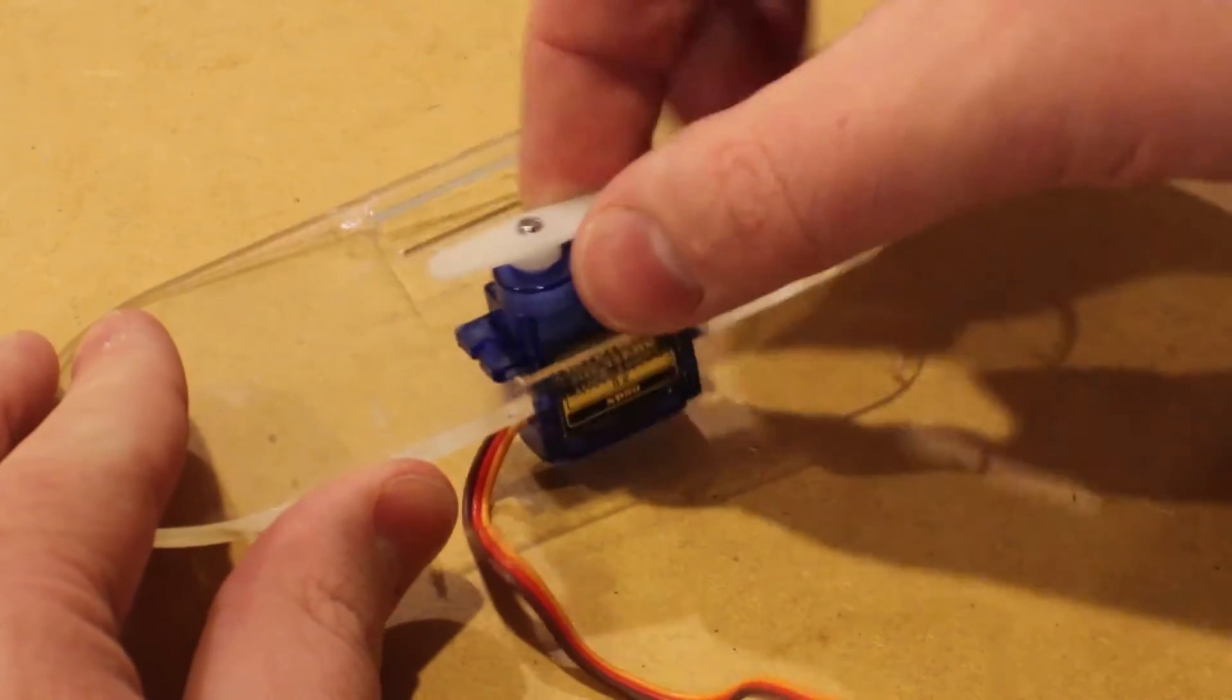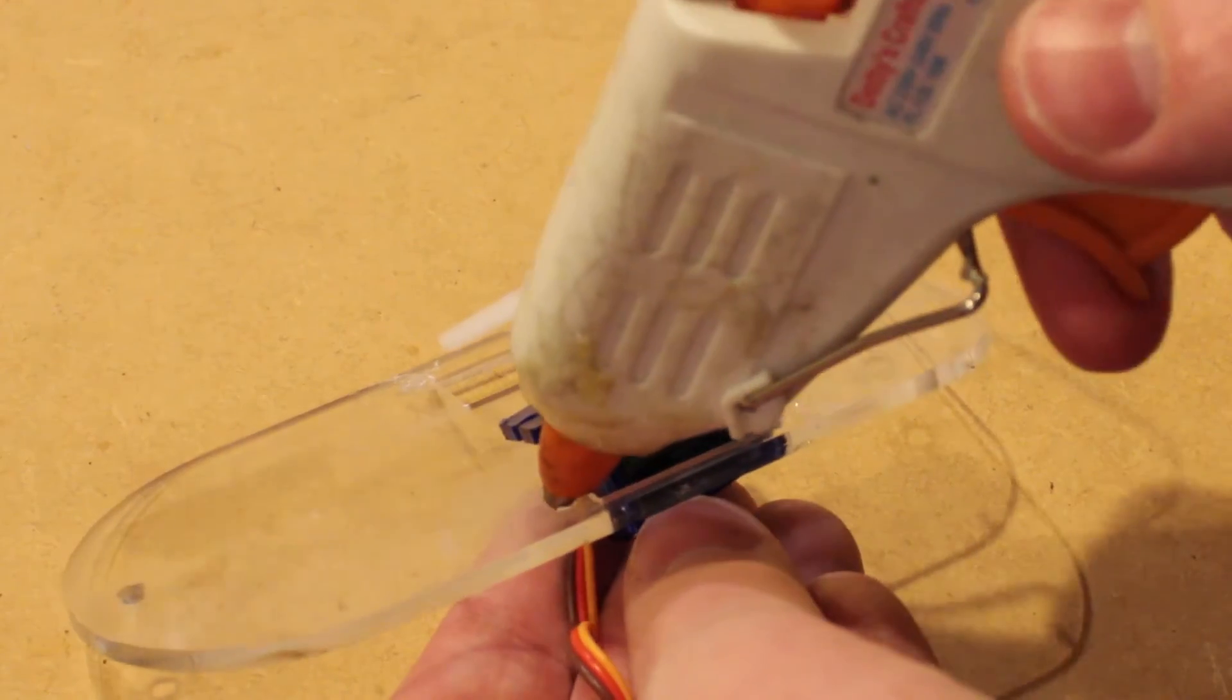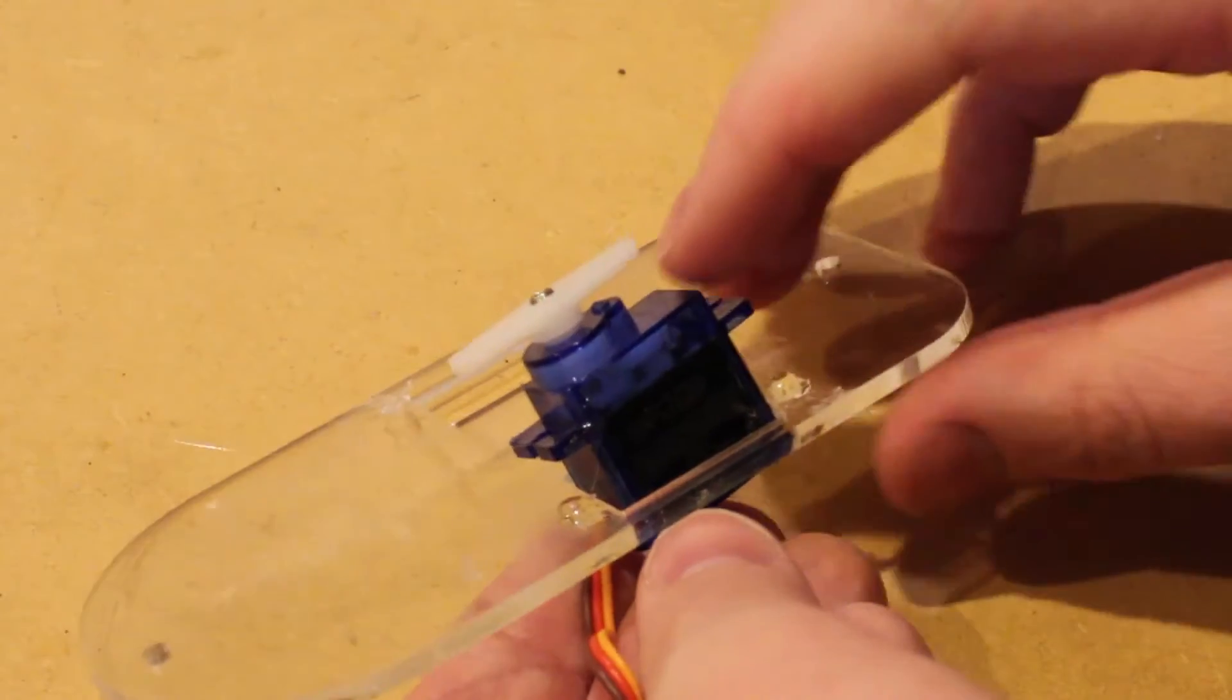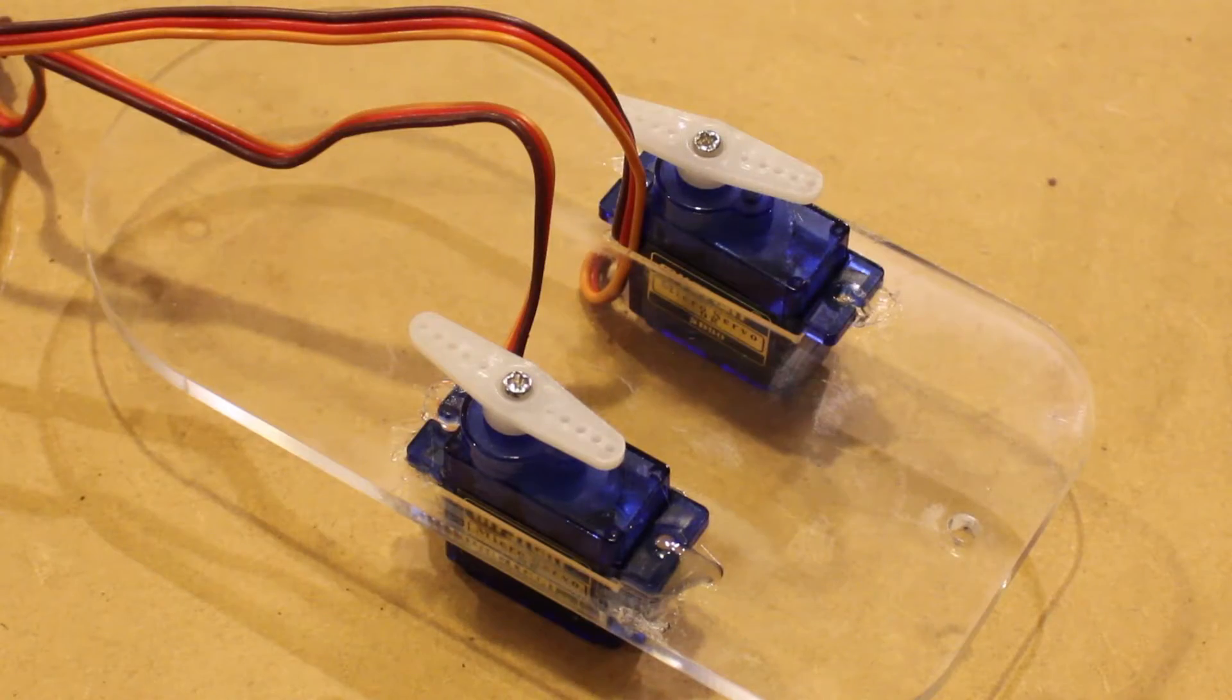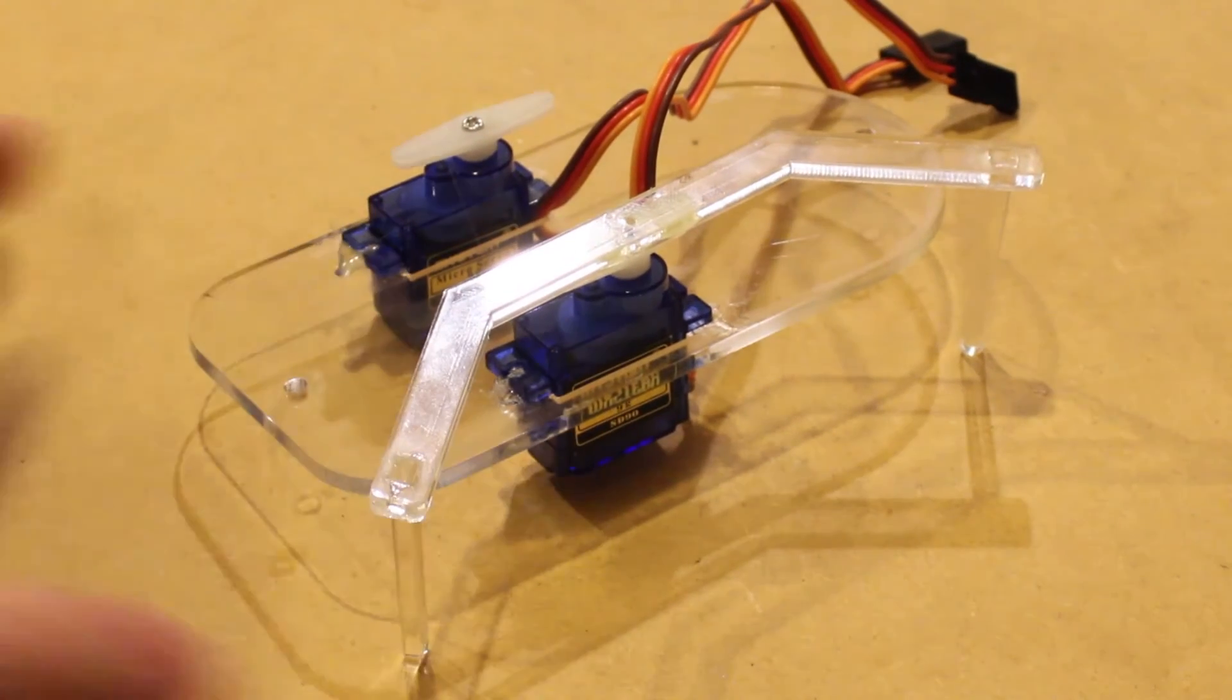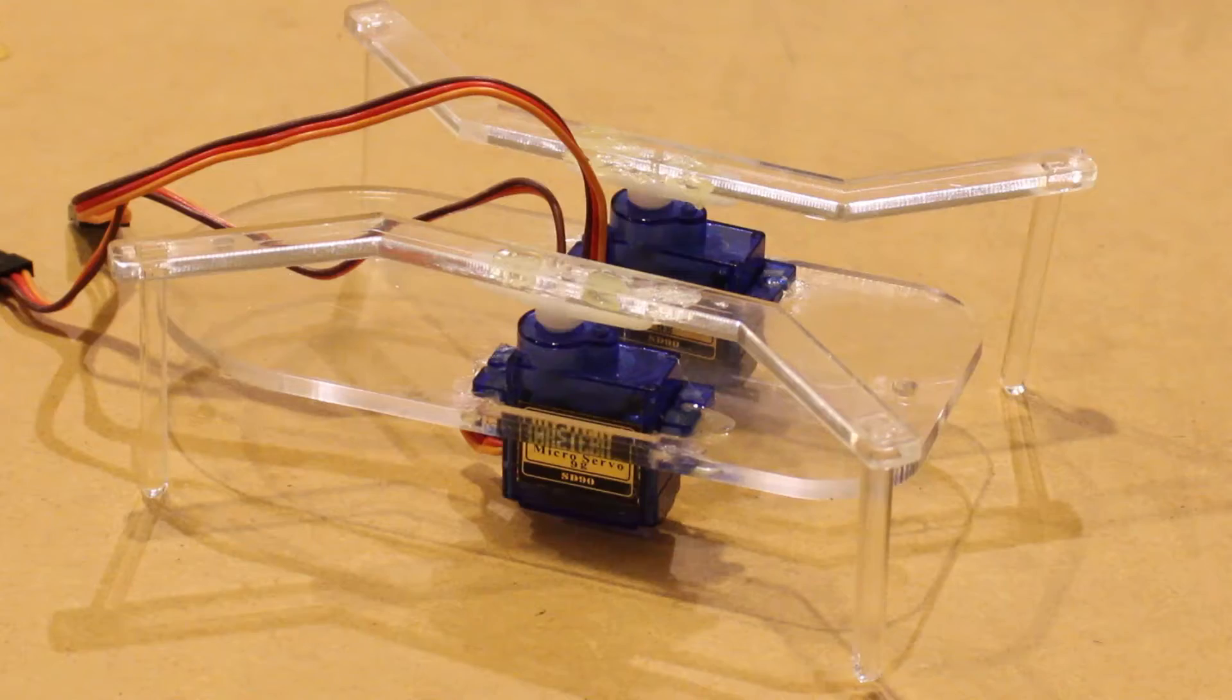Then using some hot glue, I'm going to secure two of the servos to the hexapod base plate, followed by gluing one of the sets of legs to each of the servos in the following configuration.